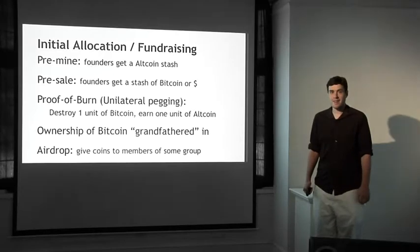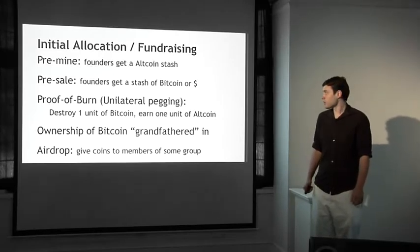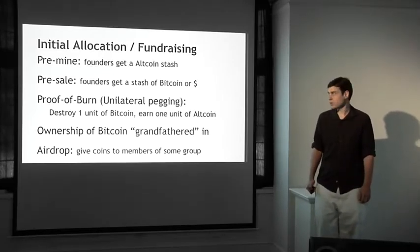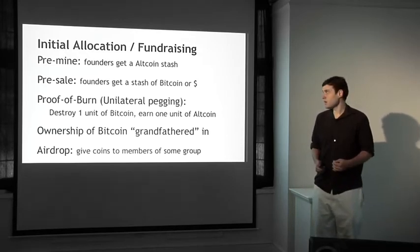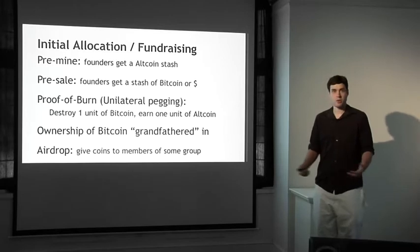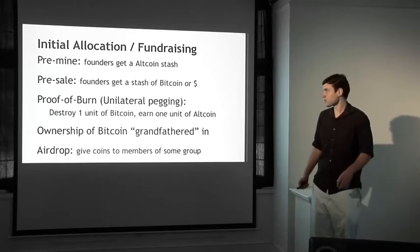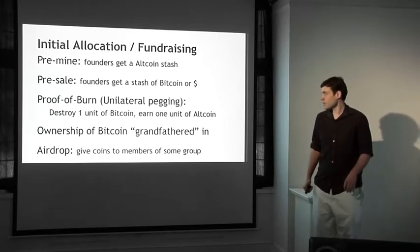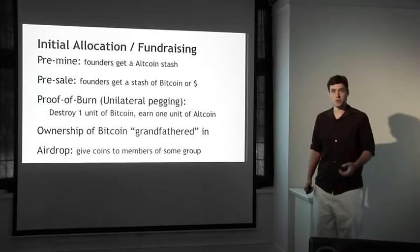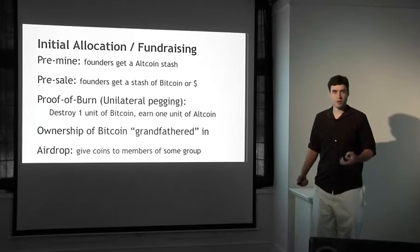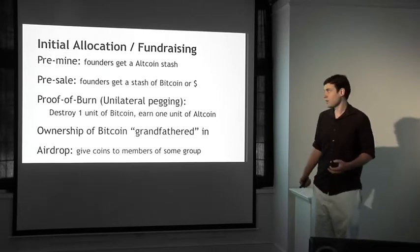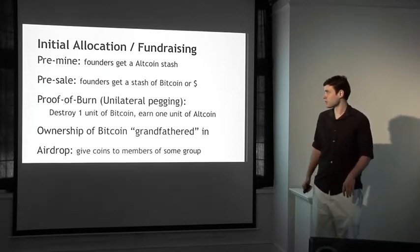Another way of allocating units of an altcoin initially is through a pre-sale. This is where the founders, instead of taking these units of currency for themselves, sell them to individuals for some other currency like Bitcoin or dollars or any other. The people who buy those currencies are the initial holders of them. On the other hand, the founders get this revenue of ordinary money or Bitcoins, which they can also use to, for example, pay developers to build the currency.